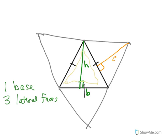This is our base, the base of the pyramid. We know that if it's a triangular pyramid, the base is a triangle, and then we have three lateral faces: one, two, three. If we're finding surface area, that means we're basically saying we have a present that we're wrapping—it's the outside of the figure.